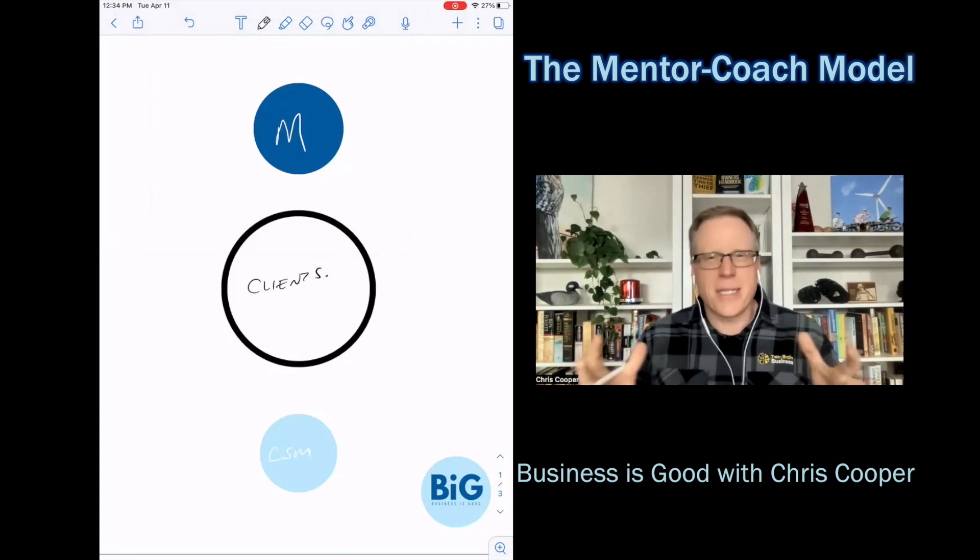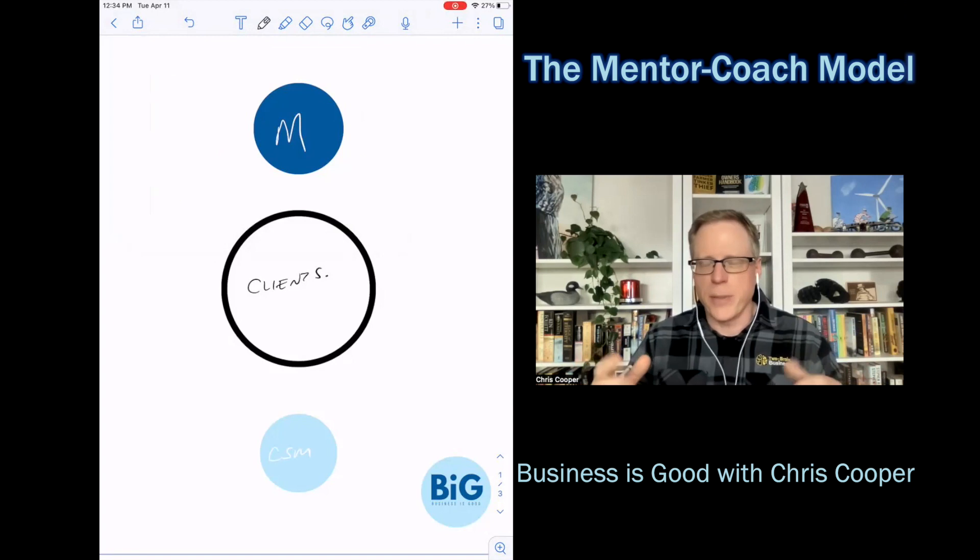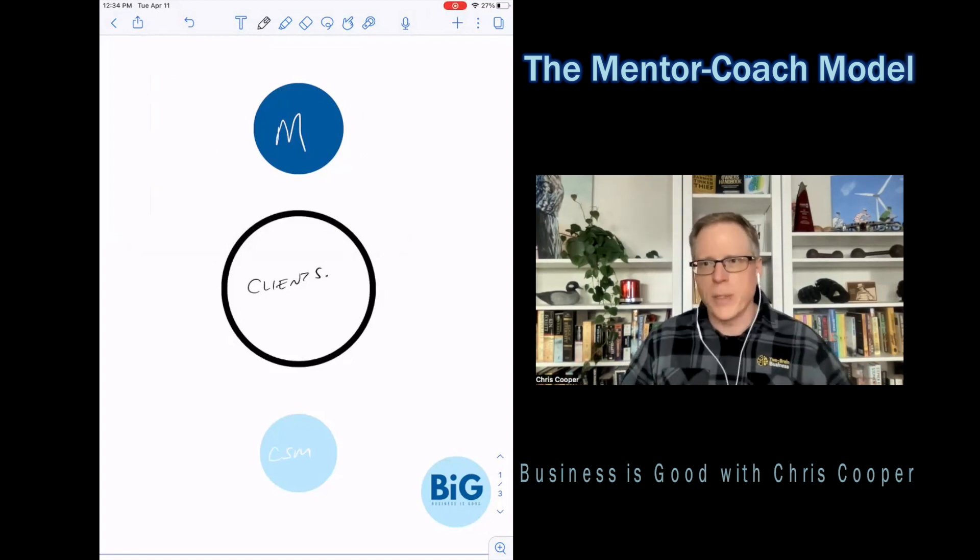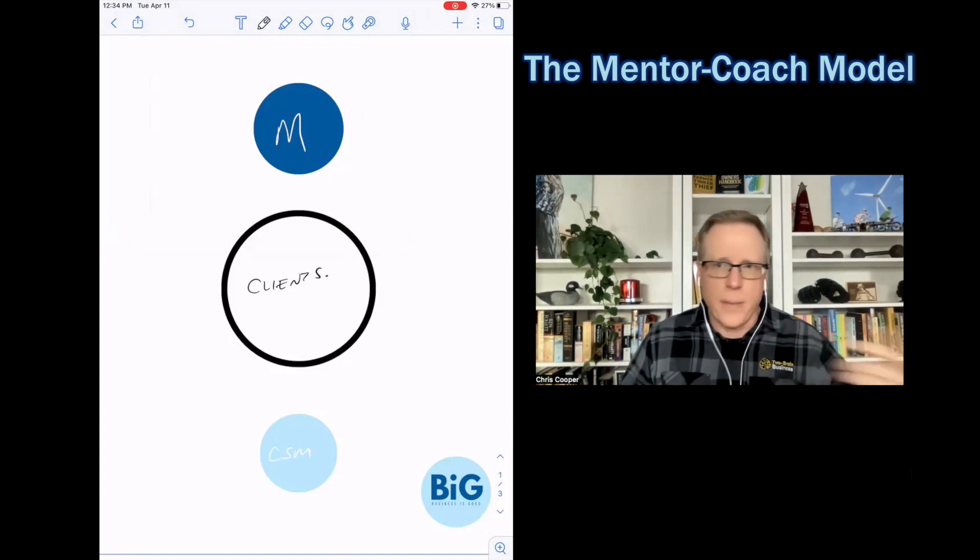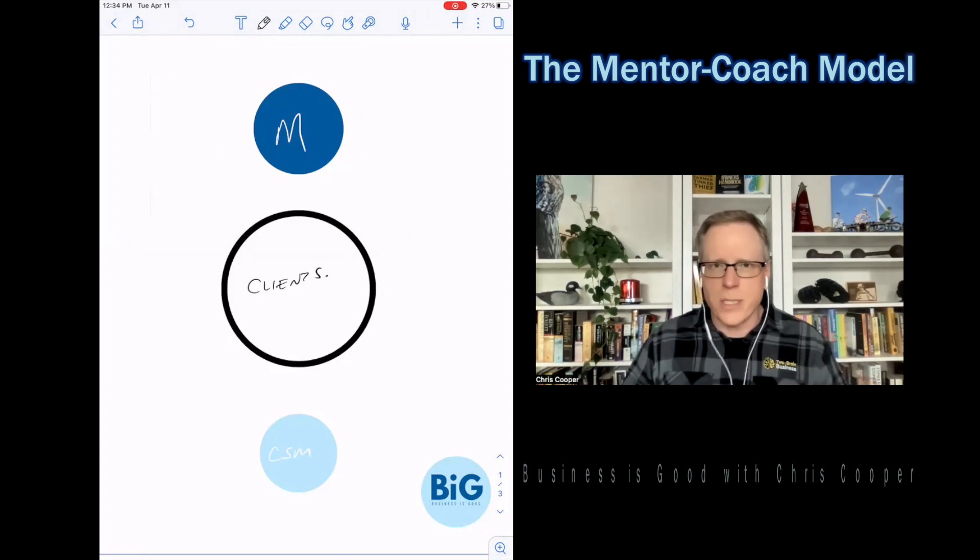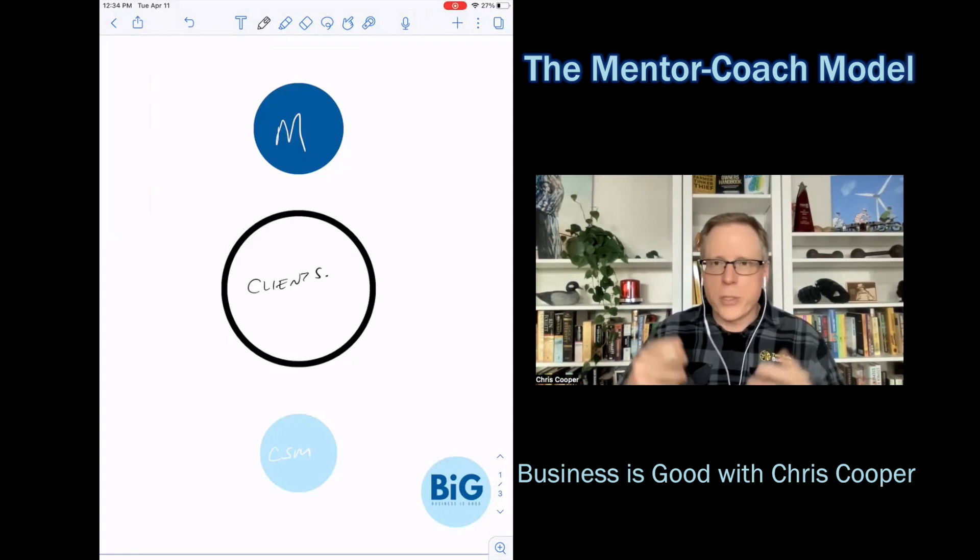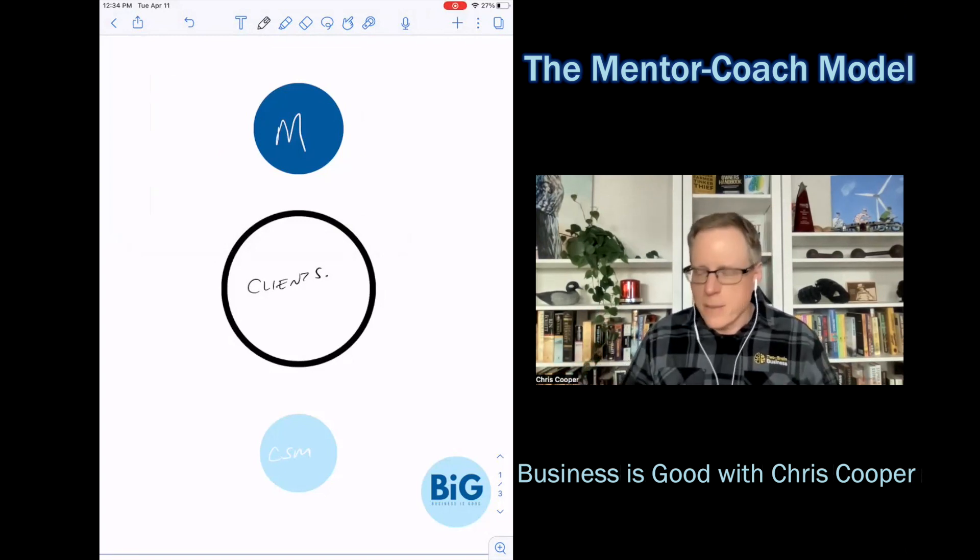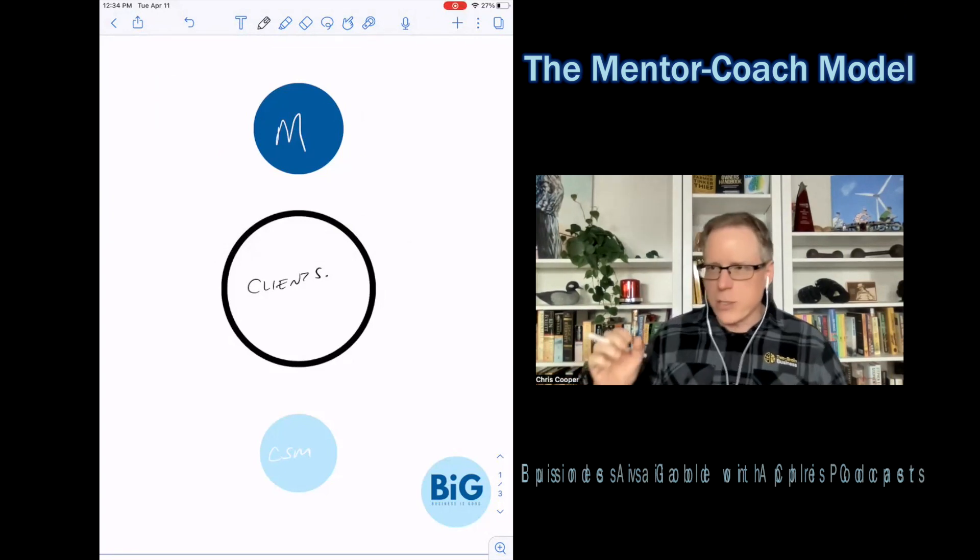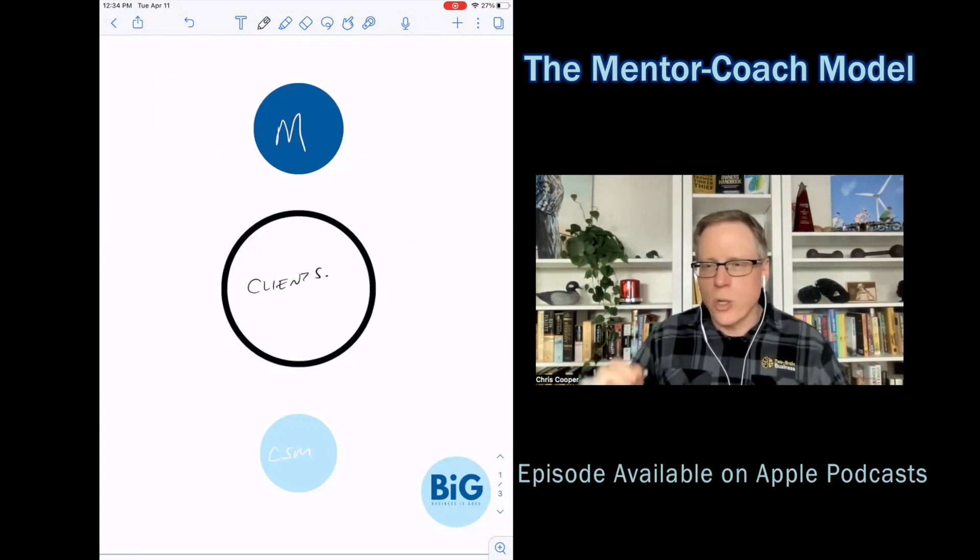And then if you were smart, you would have somebody called like a CSM or a concierge. So I'm going to put CSM because that's what they call it at Two Brain. But this person's job is to be kind of the safety net for your program. So if somebody needs to find materials, they jump in. If somebody needs a welcome package, they jump in. If somebody is having troubles or dropping off or not showing up, this is where the CSM comes in. And traditionally, this role, concierge, worked with the mentor to figure out how to serve the clients best.